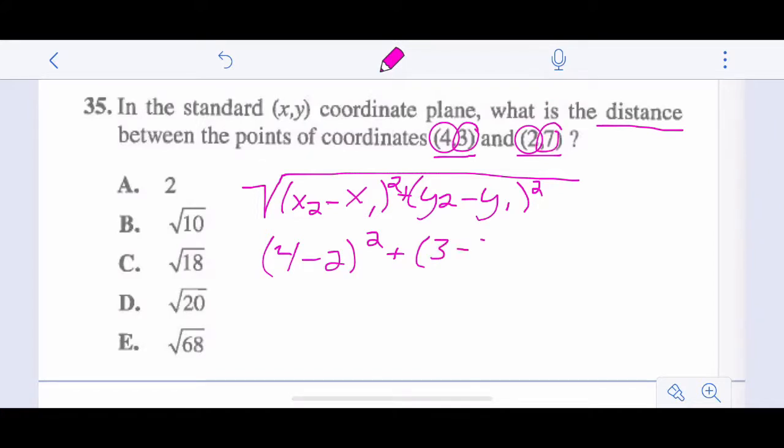We have 4 minus 2 squared plus 3 and 7. 3 minus 7 squared. And that's going to be 2 squared, which is 4, and negative 4 squared, which is 16, so it's positive. Any number squared is a positive. So 16 plus 4 is 20. So we take the square root of that, and we have our answer is D.